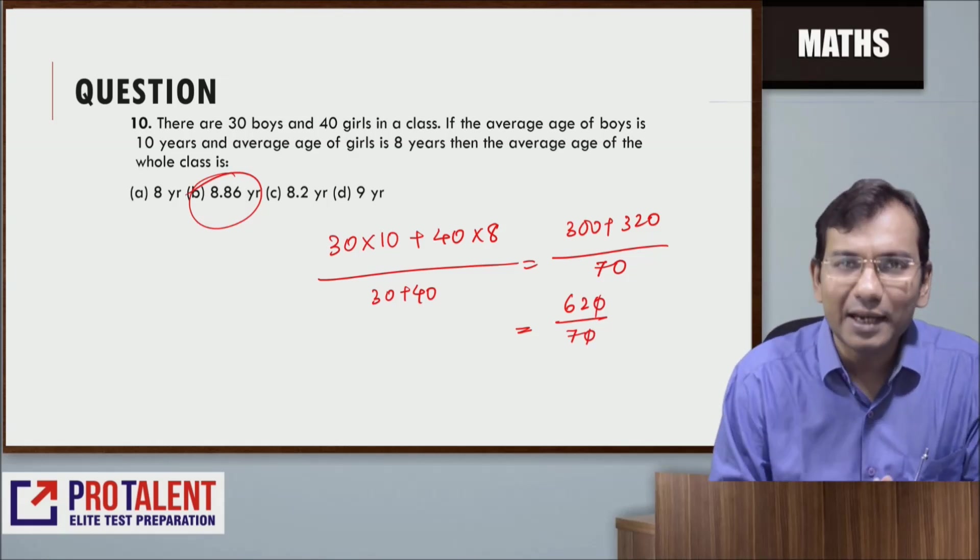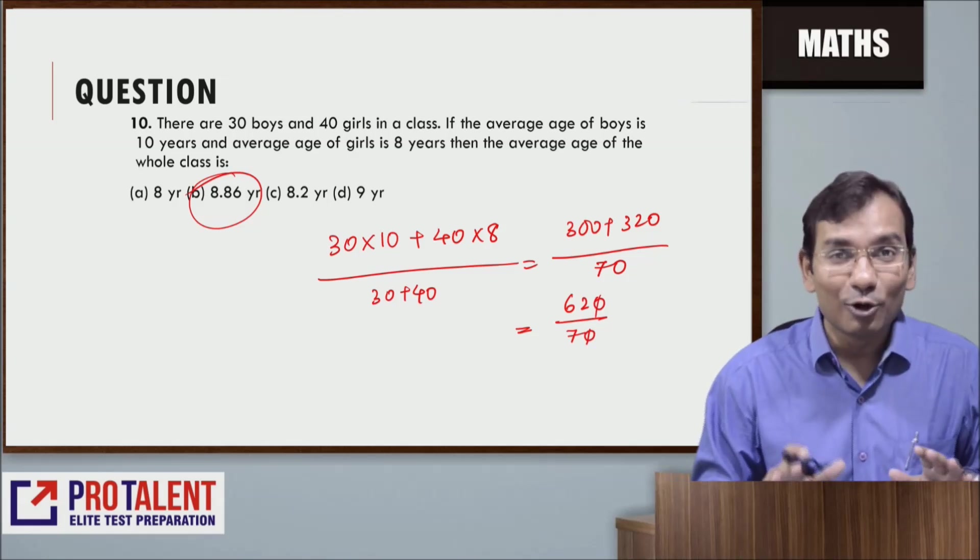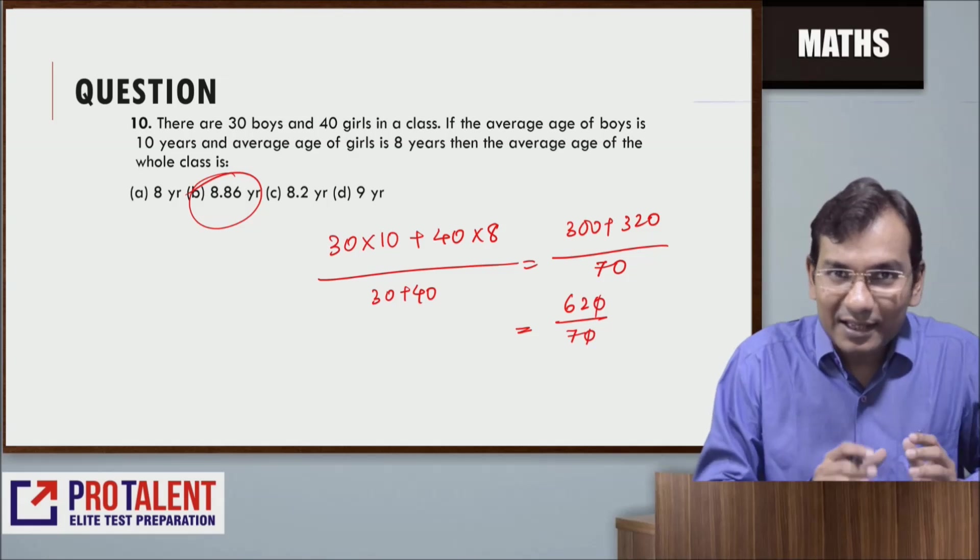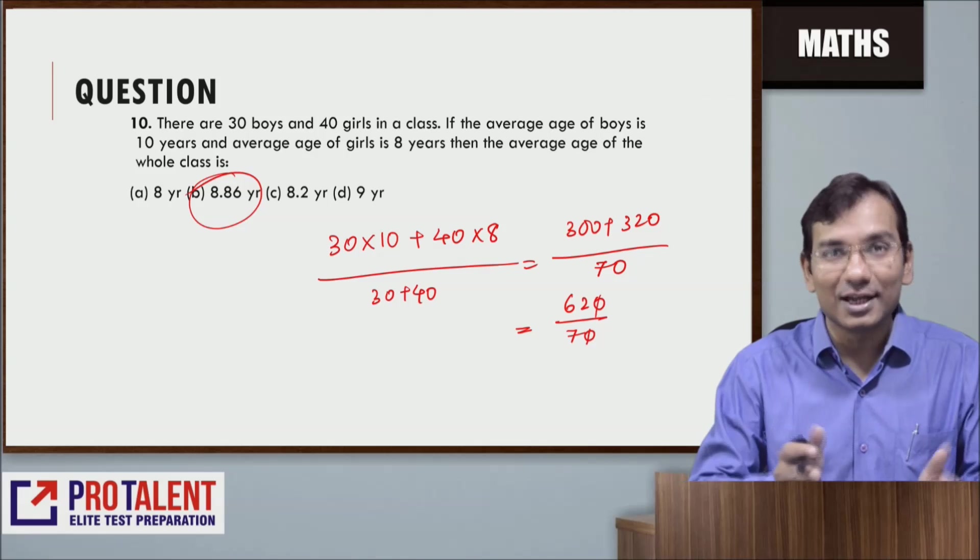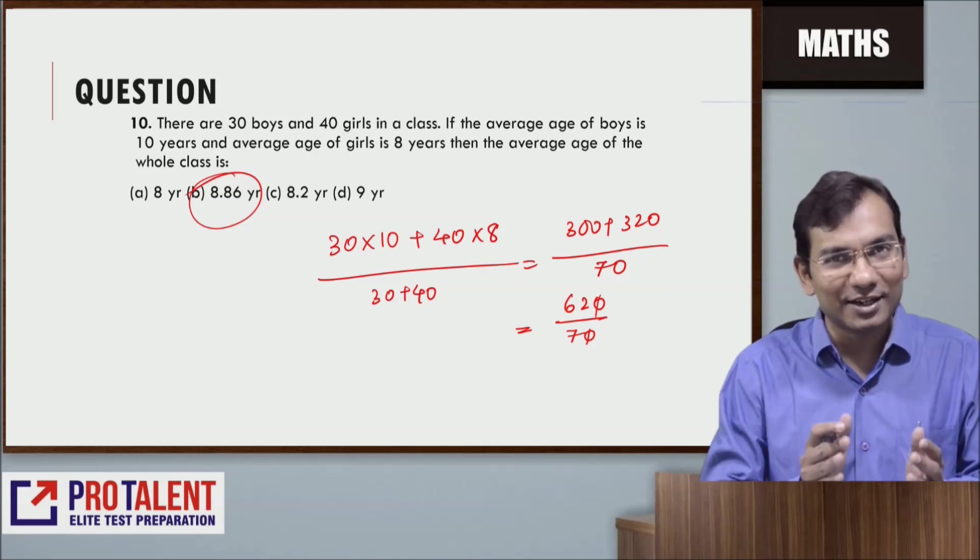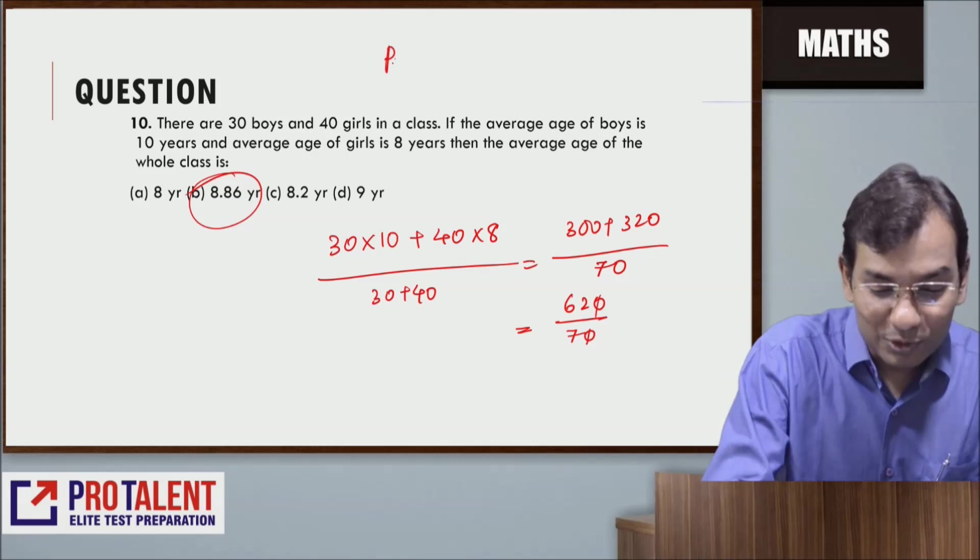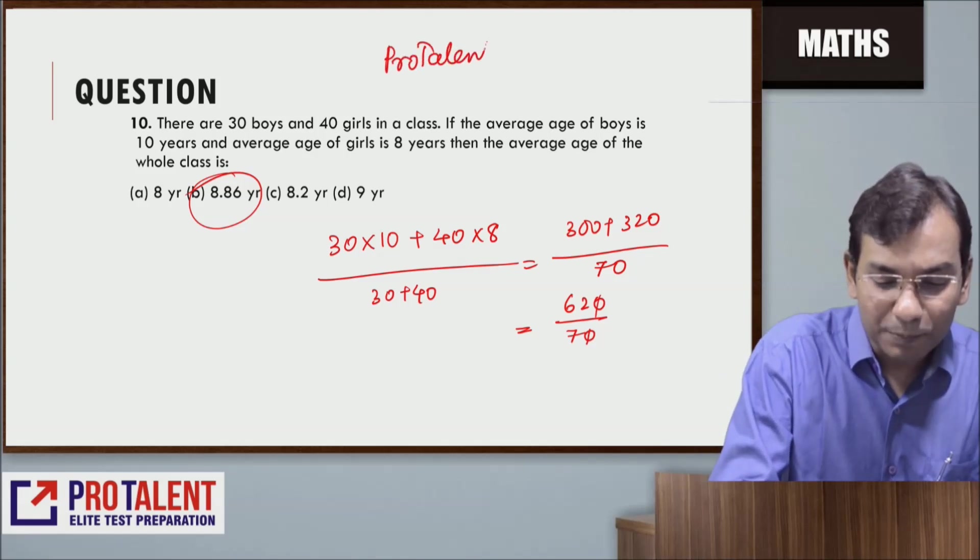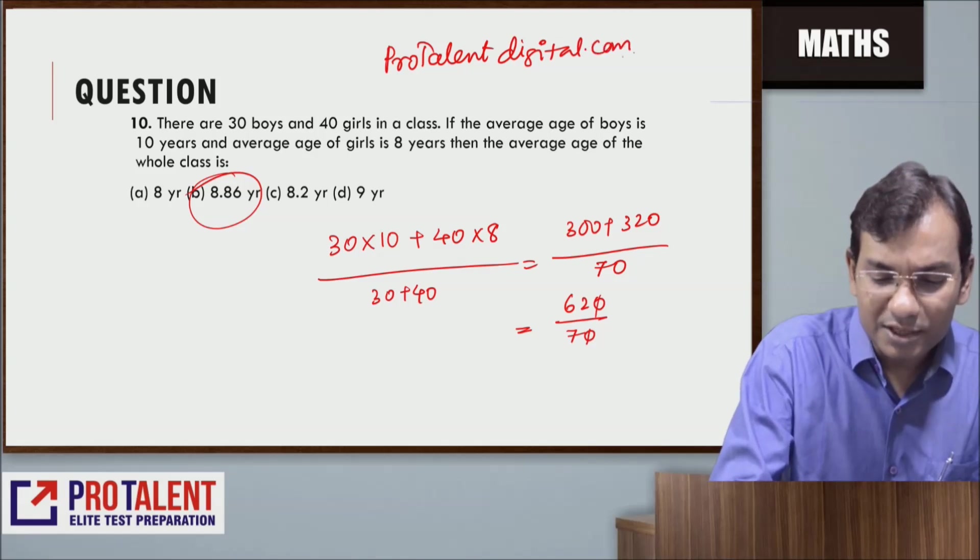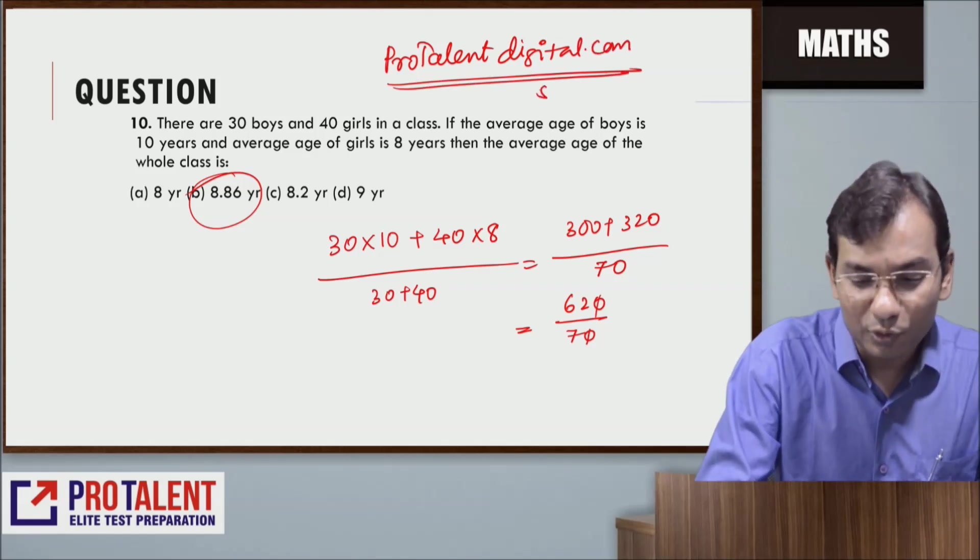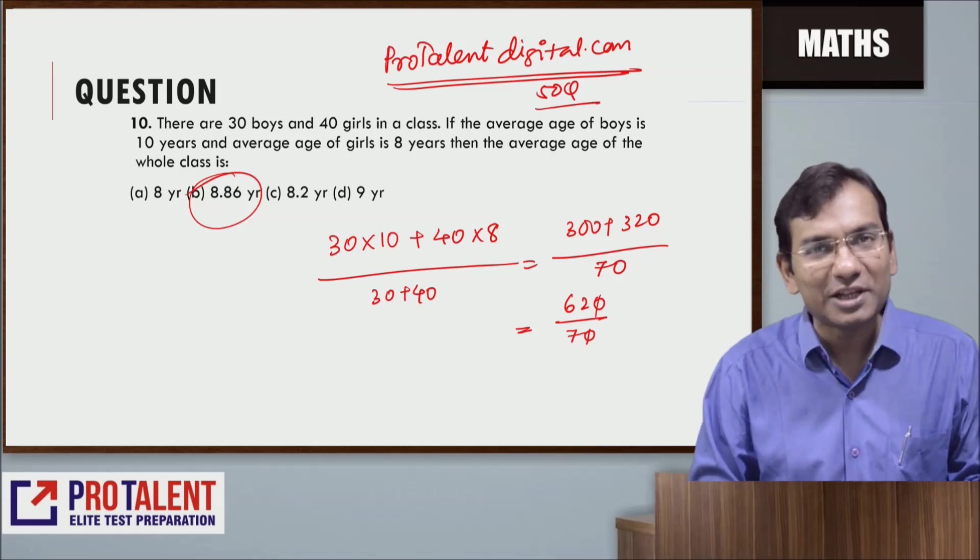This is how shortcuts and calculations are done. Good students are those who balance quick methods as well as conceptual knowledge. Both these things work together. With this I'm closing this module. Don't miss out taking tests from protalentdigital.com. On protalentdigital.com we have given you 50 questions for your practice. Thank you very much and all the best.